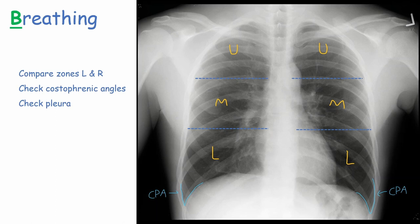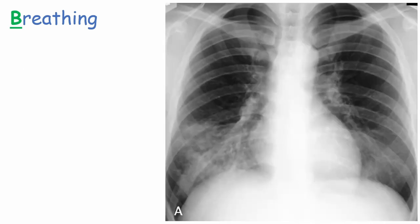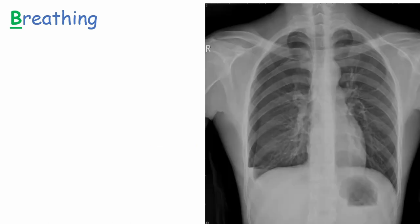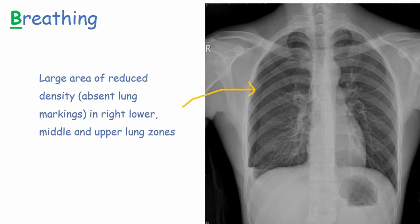Let's have a look at some chest X-rays with abnormalities in B, Breathing. This patient has a large focal area of increased density in the right lower zone — this is a right-sided pneumonia. Notice the asymmetry between the left and right lower zones because of the opacity. When the area of increased density is caused by fluid in the alveolar airspace, we call this consolidation. This next patient has a large area of reduced density, or absent lung markings, in the right lower, middle, and upper zones laterally — this is a pneumothorax.